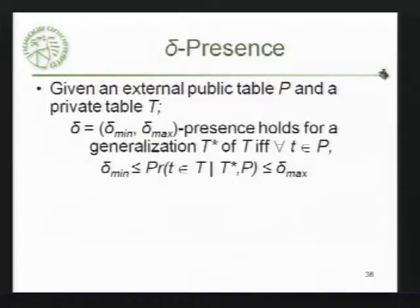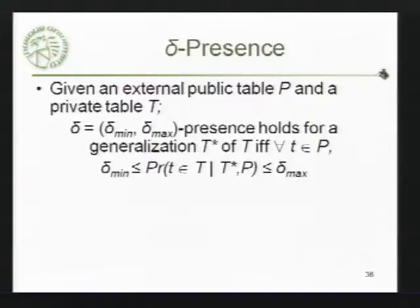So what delta-presence does is define privacy as preserved if the adversary's estimate of the probability that someone appears in the data set is between some upper and lower bound — between delta-max and delta-min. Now why do you want both an upper and lower bound? You could say, well, with at most 5% probability you're in this data set. That sounds good, but what's the harm in saying: I can say for certain you aren't in this diabetes data set? Well, as an insurance company I'll just go out and insure everybody whose probability of being in the data set is zero, and that'll give me more customers than I need. So you may also want to say there's a possibility that anybody could be in that data set.